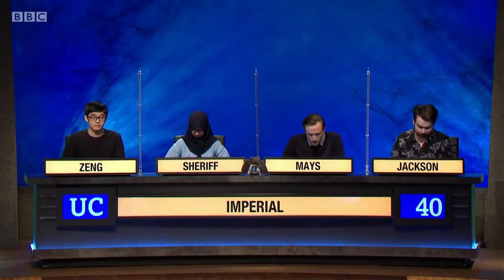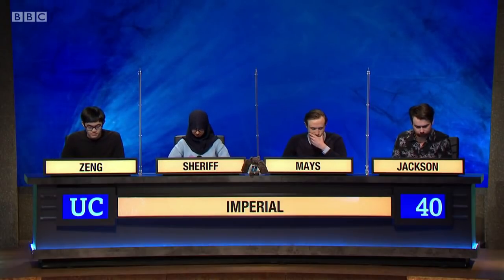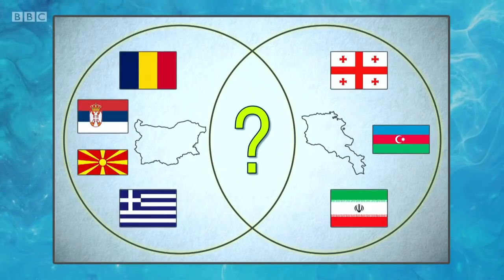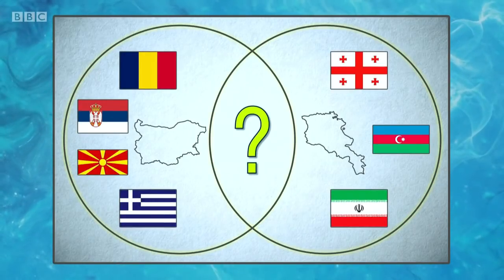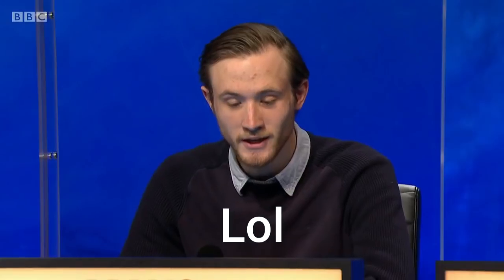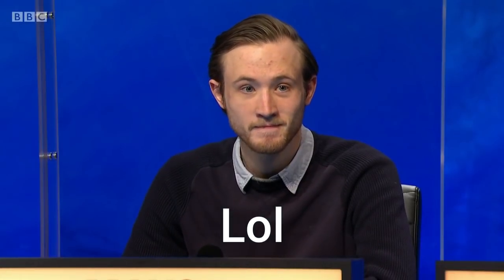Following on from the Czech Republic and Belarus and their shared neighbour Poland, picture bonuses show three more Venn diagrams of land borders. Give the single shared neighbour in each case. First: Bulgaria and Armenia share Turkey. Turkey is correct.